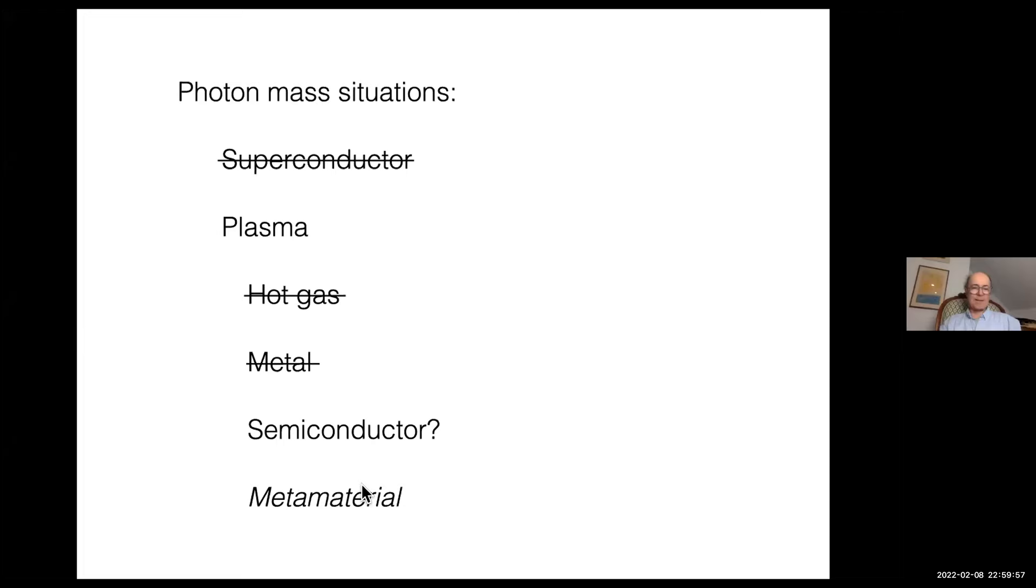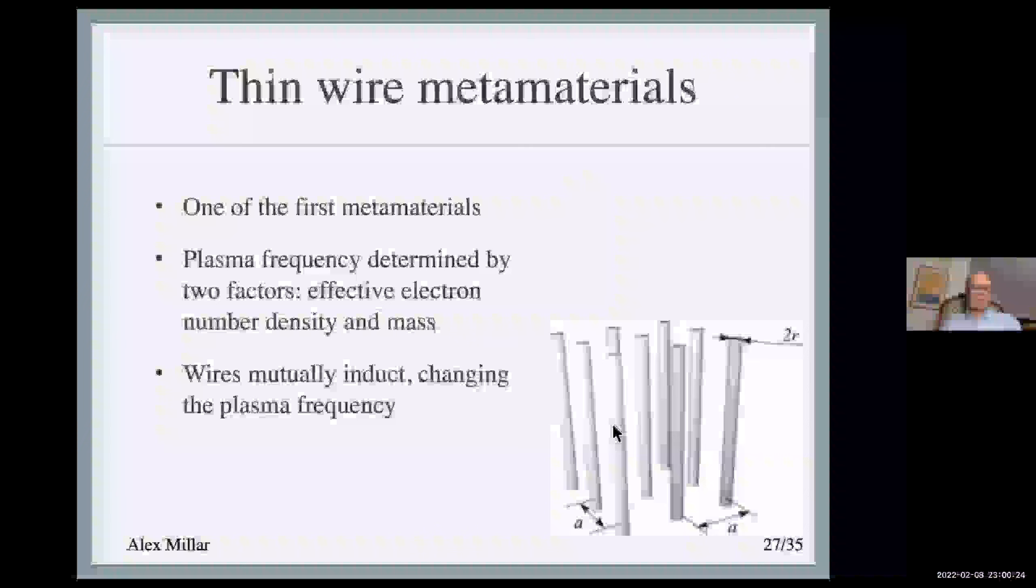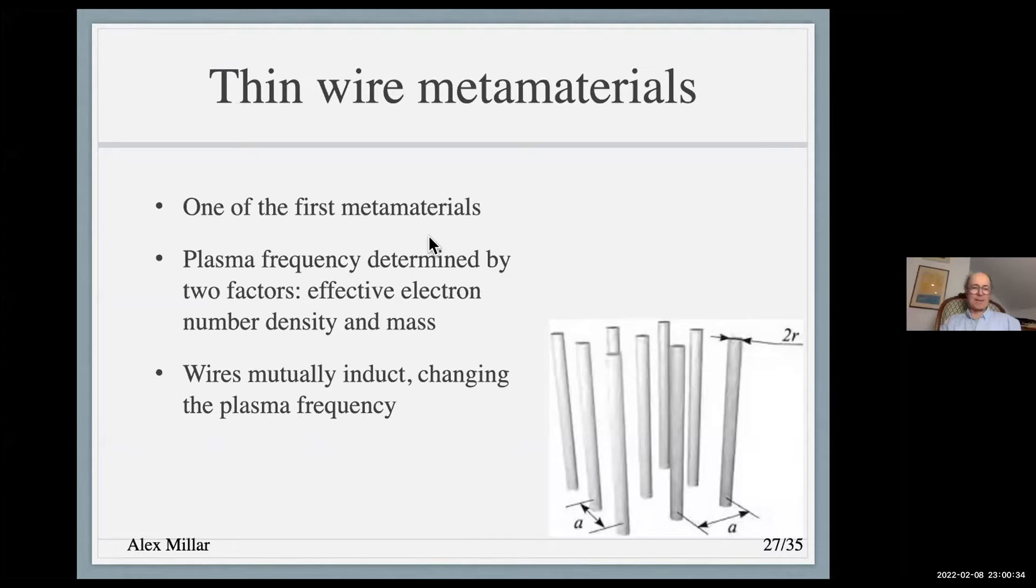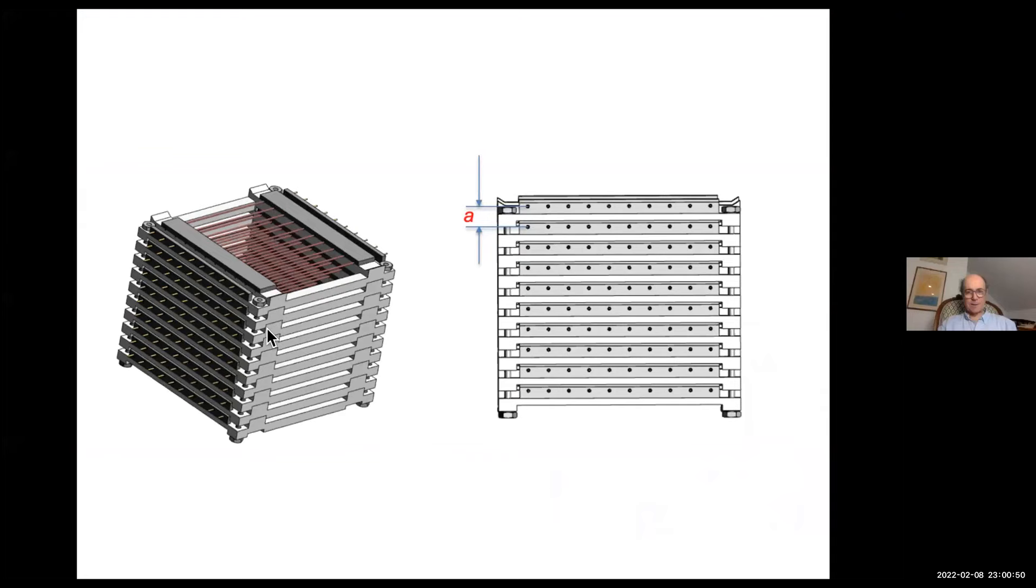The simplest idea that occurs to one immediately, once you start thinking along these lines, is instead of using a solid block of metal, just use a bunch of wires with spaces in between. Then the electron density will be much less. That turns out to be essentially the winning strategy. Thin wire metamaterials, which are just arrays of thin conducting wires, have a plasma frequency, and for other purposes they've been designed and used for quite a while.